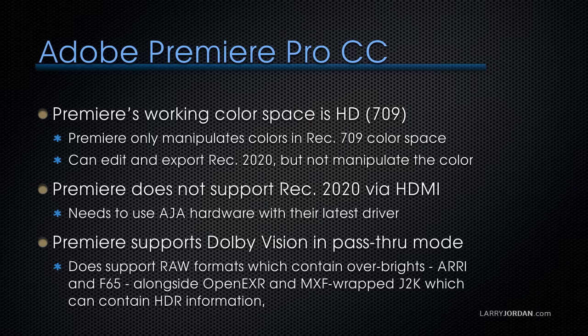When it comes to Premiere, Premiere's working color space is HD — Rec. 709. It only manipulates colors in the Rec. 709 color space. We can edit and export Rec. 2020, but we can't manipulate the color; we can pass it through, but we can't change it. Also, Premiere does not support output of Rec. 2020 video via HDMI — to see increased saturation or brightness, we need to use AJA hardware like a T-Tap with their latest driver. Premiere does support Dolby Vision, but only in pass-through mode. It also supports RAW formats containing overbrights — nit levels greater than 100 — shot by Arri and Sony F65 cameras, alongside OpenEXR and MXF/JPEG 2000, which can contain HDR information.